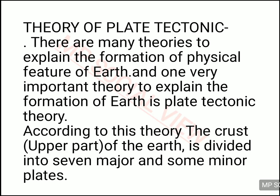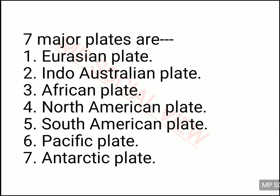There are many theories about how various landforms came into existence, and one of the most accepted and famous theories is the theory of plate tectonics. It is believed that the earth is divided into various major and minor plates, and these plates are moving because there is molten lava inside the earth. We are mostly divided into seven major plates and some minor plates. The seven major plates are: Eurasian plate, Indo-Australian plate, African plate, North American plate, South American plate, Pacific plate, and Antarctic plate.